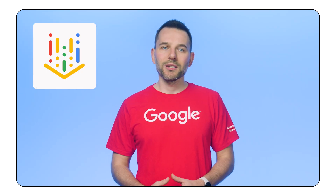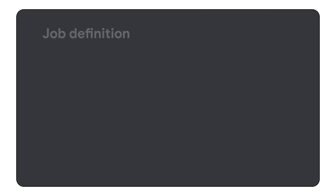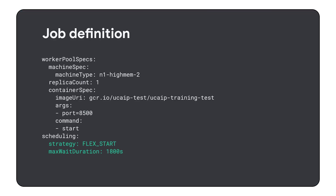In the case of Vertex AI, using DWS is as simple as just picking FlexStart as the scheduling strategy and deciding how long your job can wait for the resources — exactly what you'd expect from a fully managed solution.